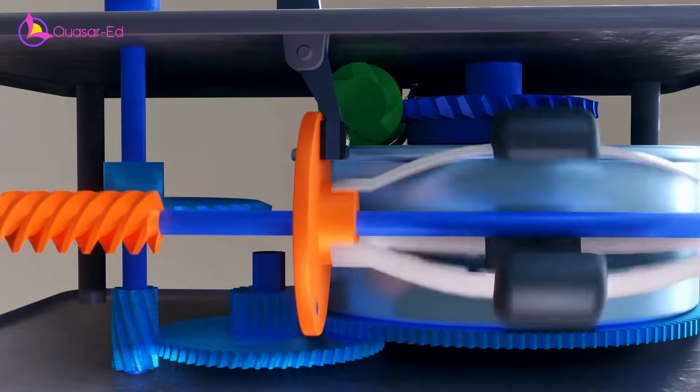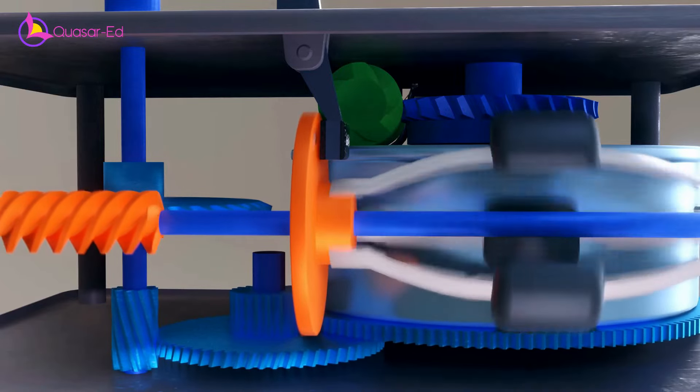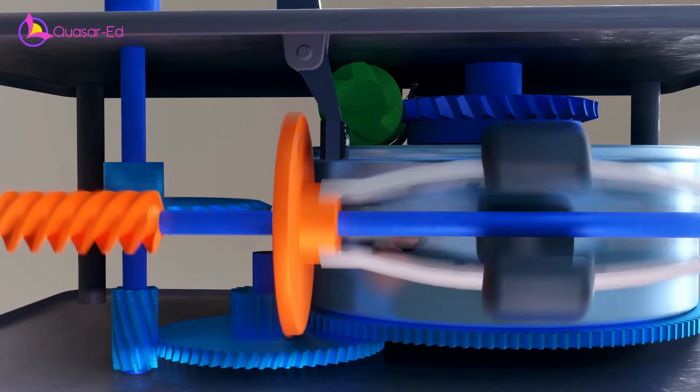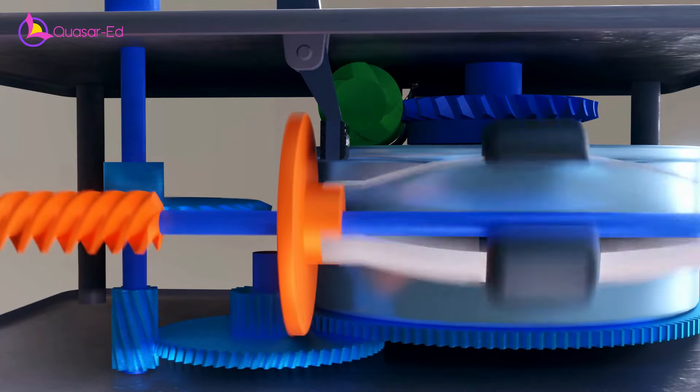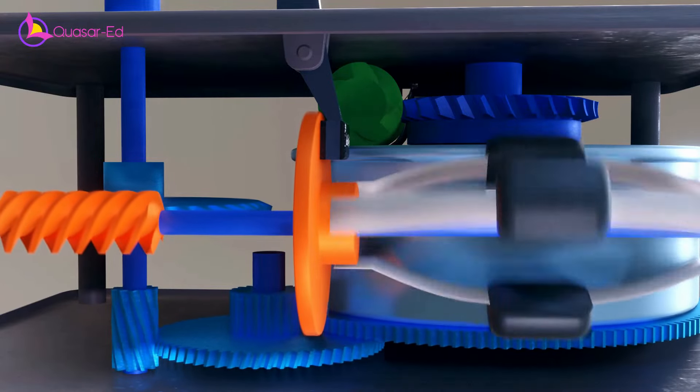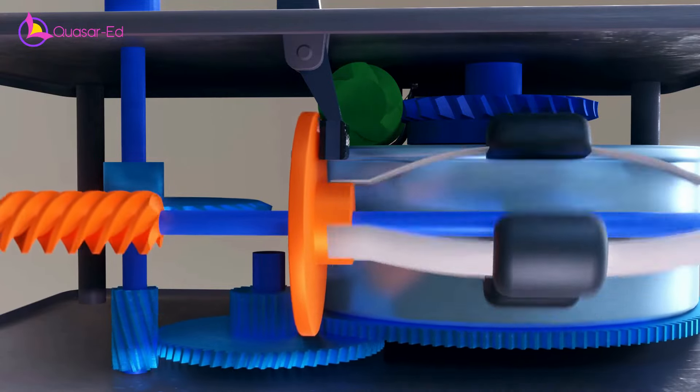When the rotation gets slower, the weights move inward and push the flange back reducing the friction between the flange and the felt pad. Reducing the friction increases back the speed, which will expand the weights and pull the flange towards the felt pad. Since it is happening in a feedback loop, we can get the decent speed at the spindle.